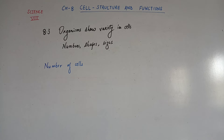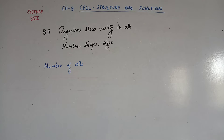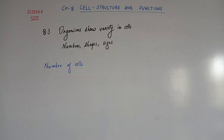Organisms made of more than one cell are called multicellular, in which 'multi' denotes many and 'cellular' denotes cell. The number of cells being less in smaller organisms does not in any way affect the functioning of the organisms.